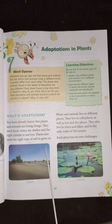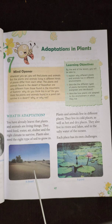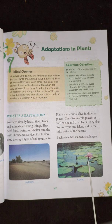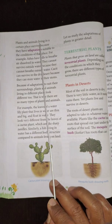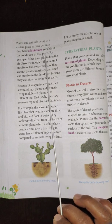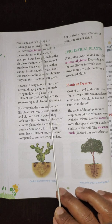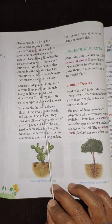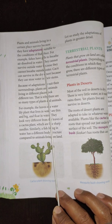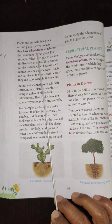You can see the picture of a desert where the climate is very hot during the day, and a picture of a pond containing an aquatic plant — a plant found in water, for example lotus. Plants and animals living in a certain place survive because they have adaptations suitable to the conditions of that place. Adaptations are certain modifications which suit the plant or animal to live in those conditions.